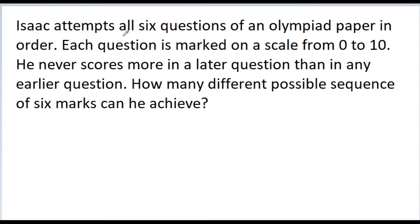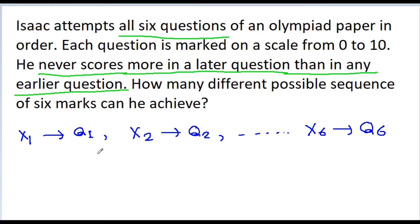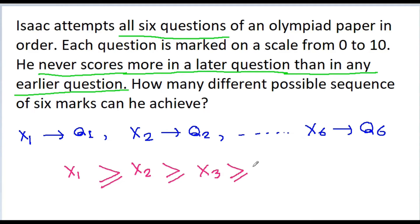So basically, Isaac attempts six questions on a BMO paper. Suppose he scores X1 marks in question 1, X2 marks in question 2, and similarly X6 marks in question 6. It is given that he never scores more in a later question than in any earlier question. That means X2 is not more than X1 — X2 is either less than or equal to X1. And similarly X2 is greater than or equal to X3, X4, X5, and X6.